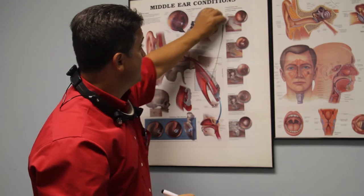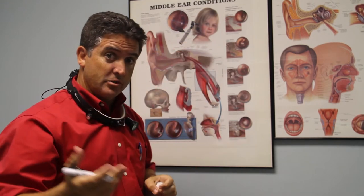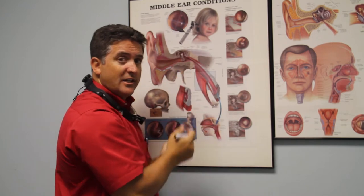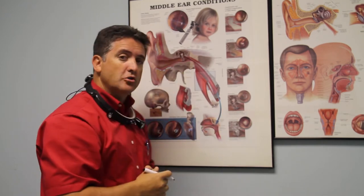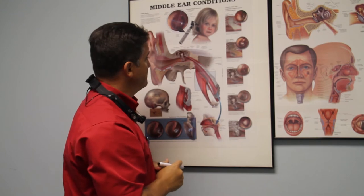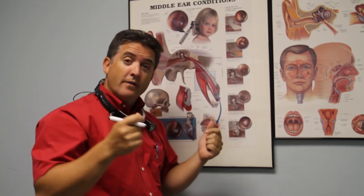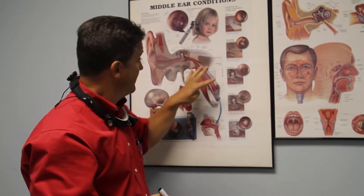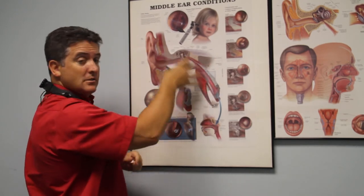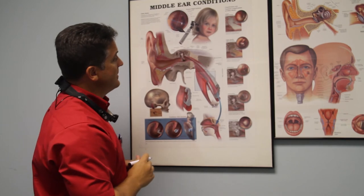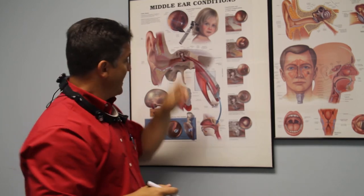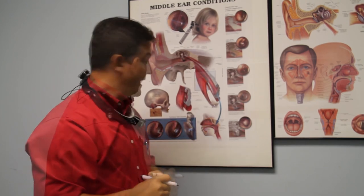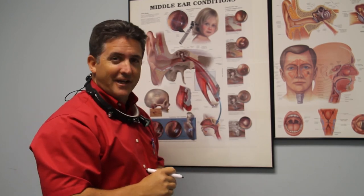If a child hasn't outgrown the need for tubes — in other words, if they haven't achieved a working eustachian tube — then we might have to put an ear tube back in and give them some more time to grow. Finally, there are some adults whose eustachian tubes just flat out don't work, and we can put a tube into the ear to bypass the function of the eustachian tube. When those tubes come out and the eardrum heals back up, generally we'll need to put them back in if the eustachian tube is still not working. I hope this was educational and thank you for listening.